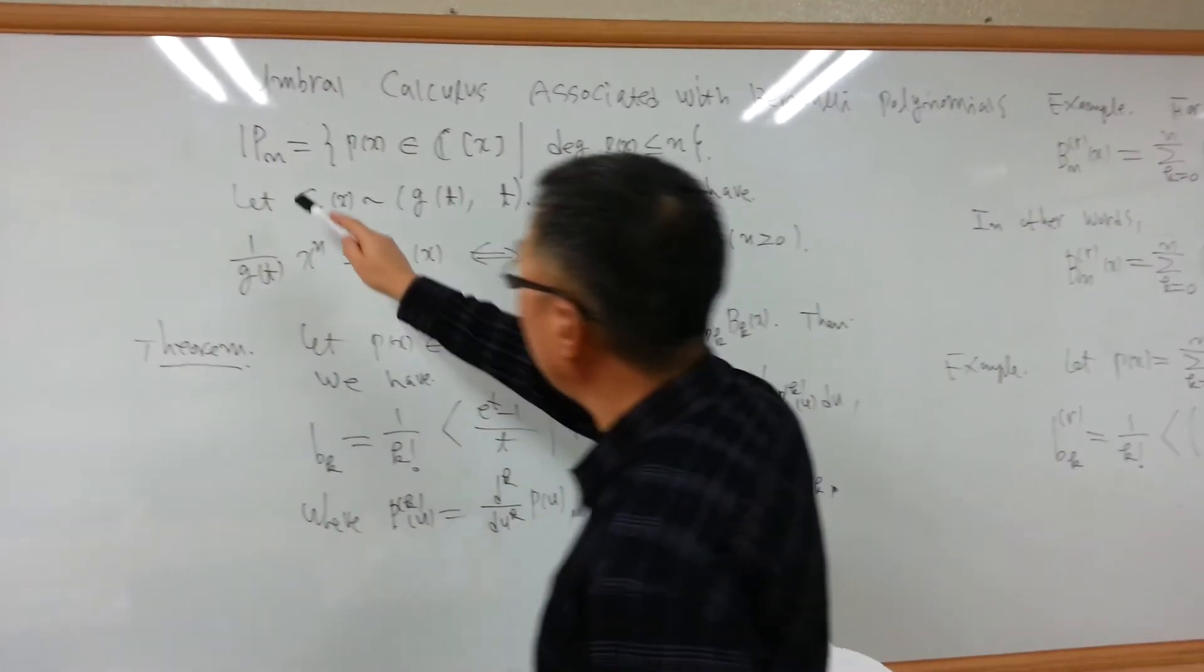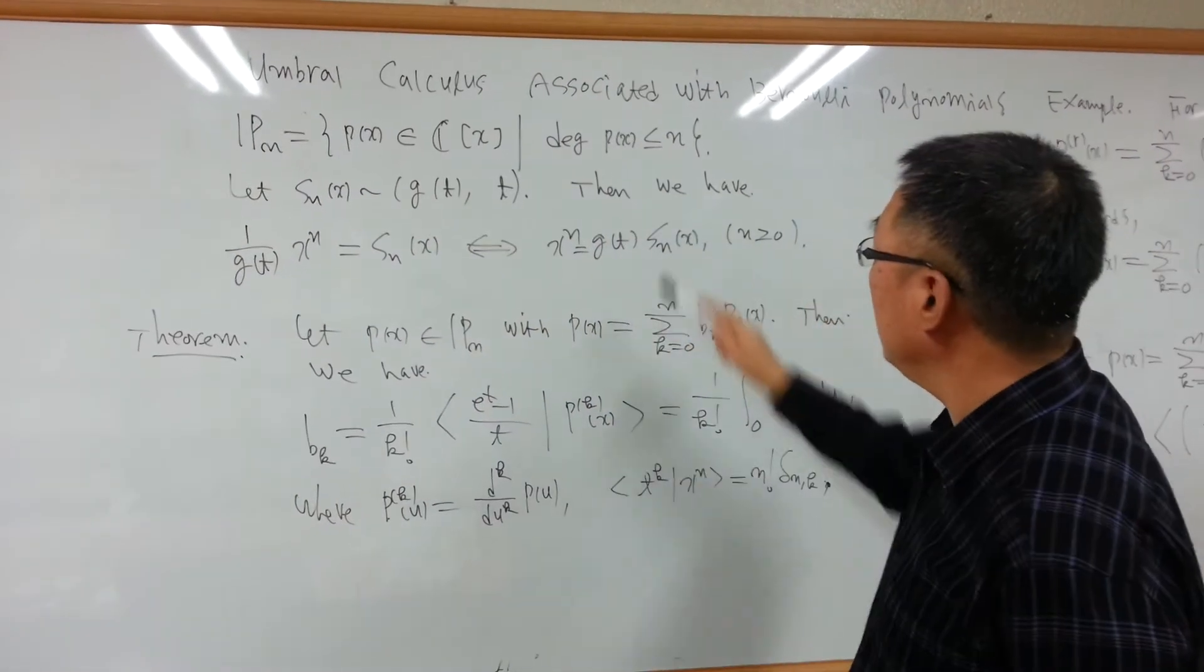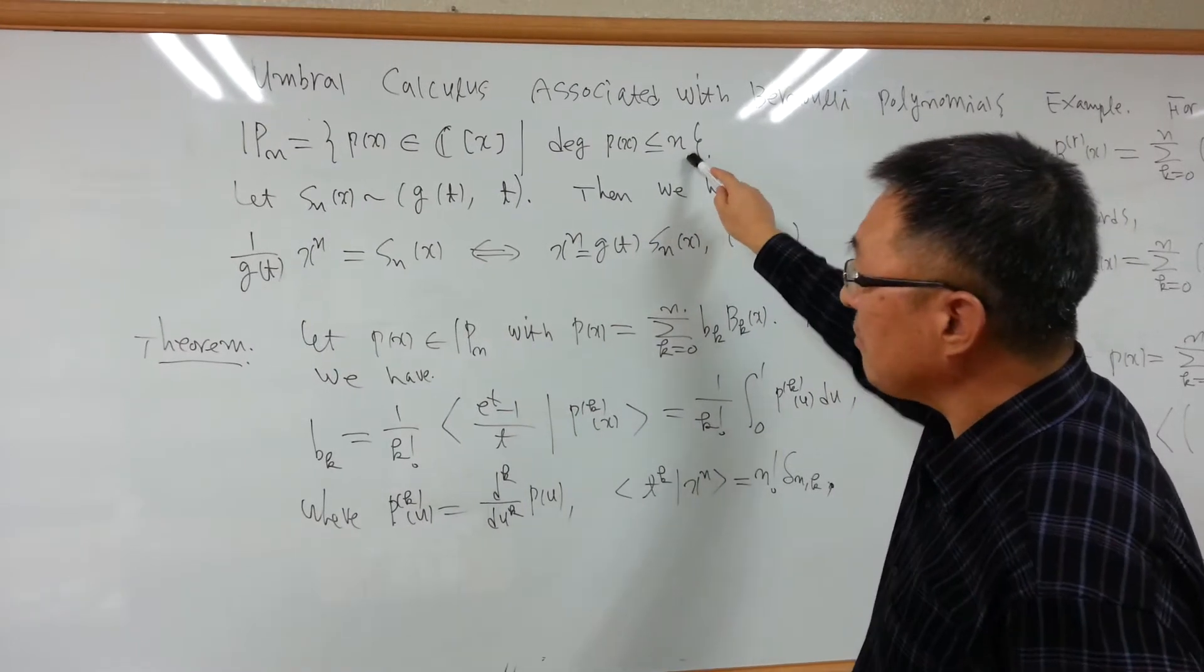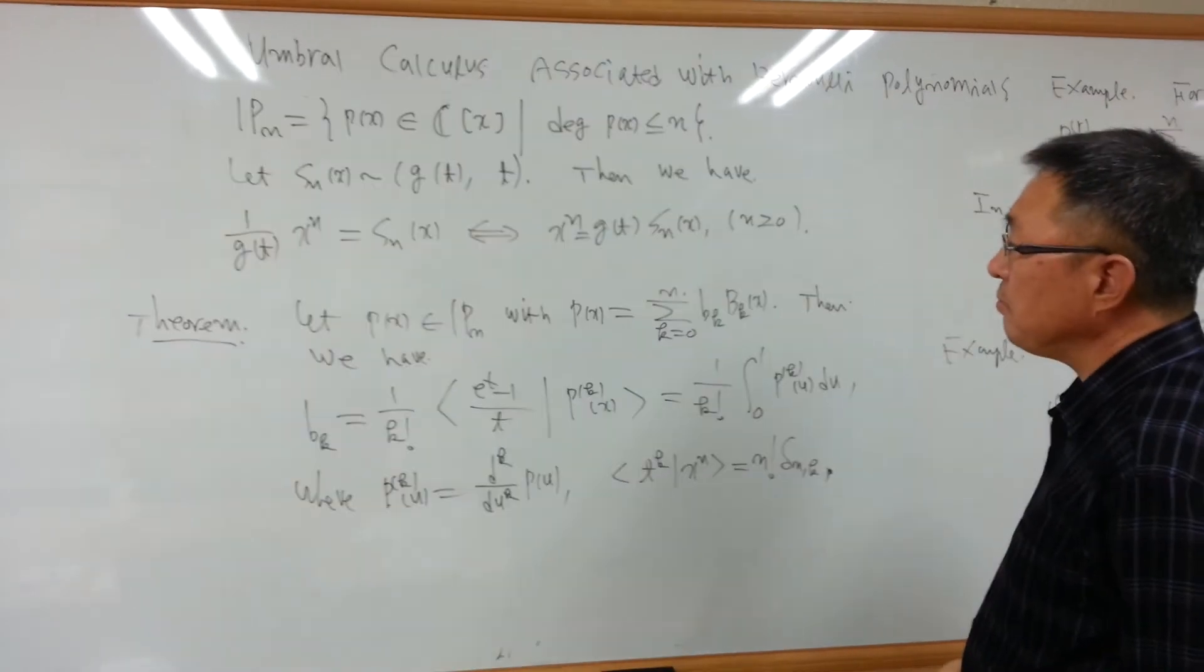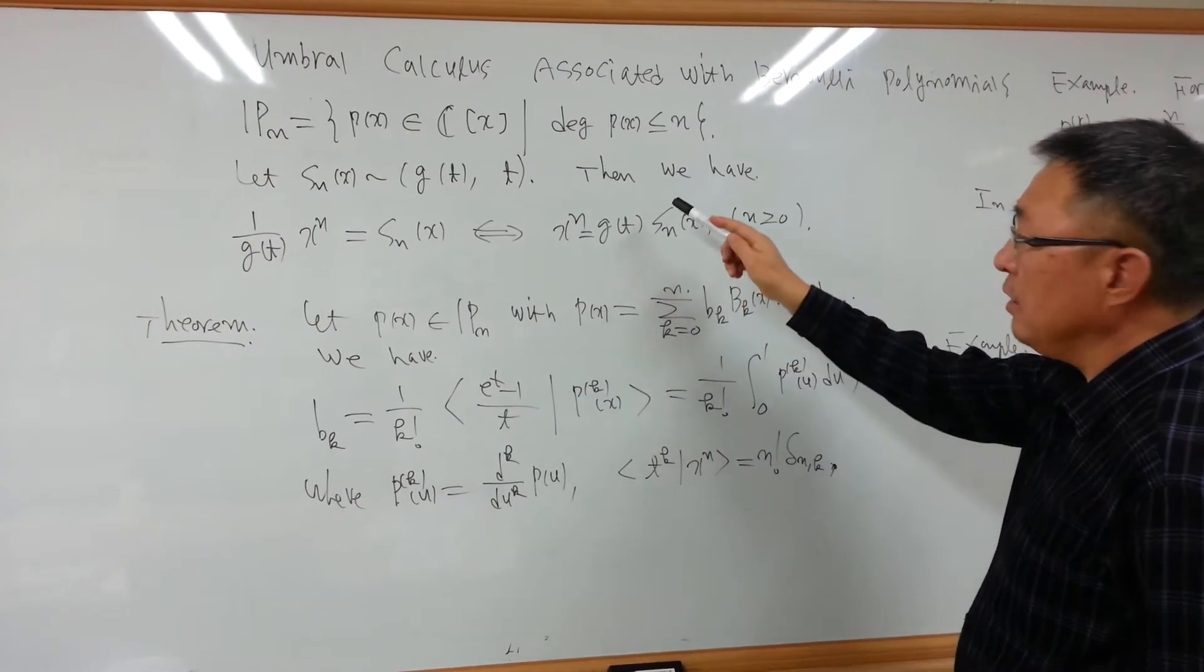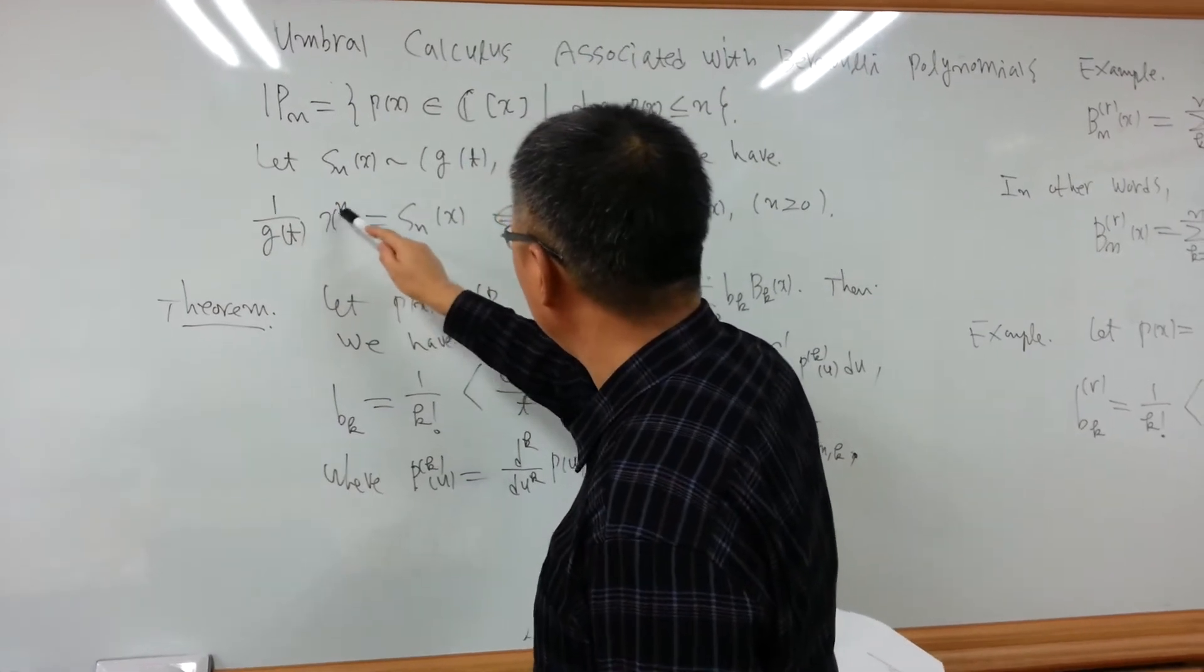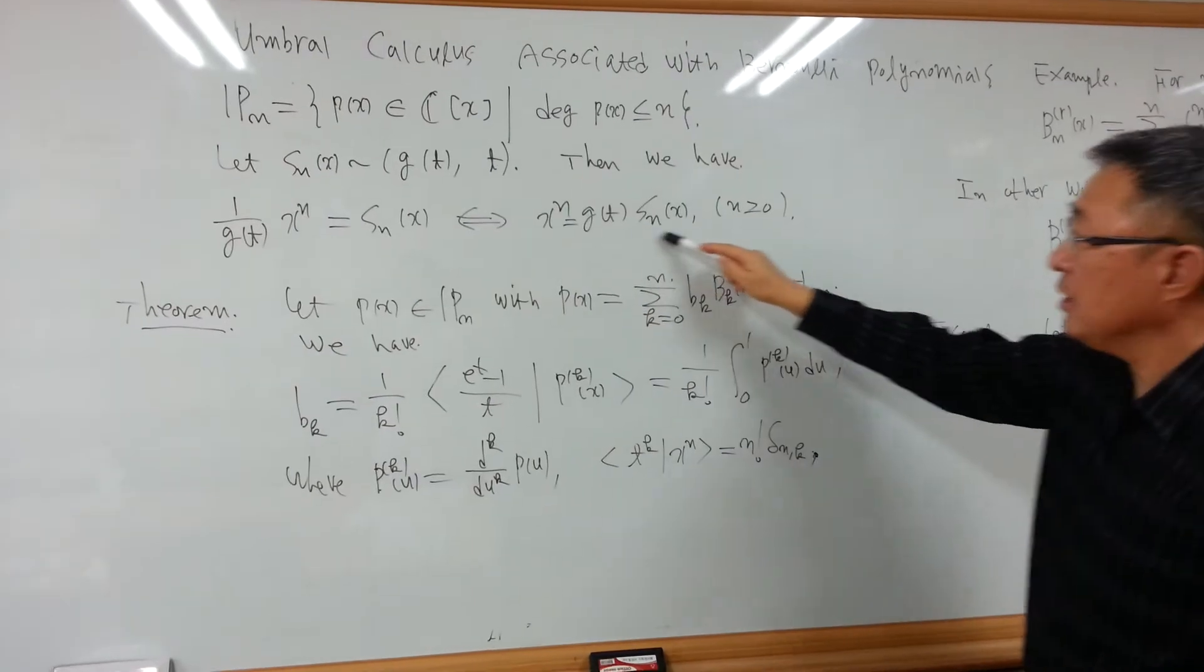Now we use the notation. Pn is the shape of a polynomial with degree less than n. Sn is the shape sequence. Then, this is the value of 1 over gt, x^2 to the n equal to Sn if and only if Sn equal like this.